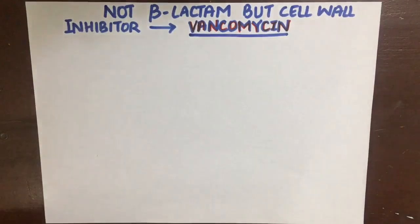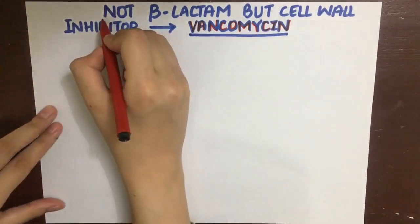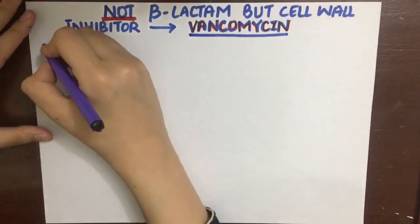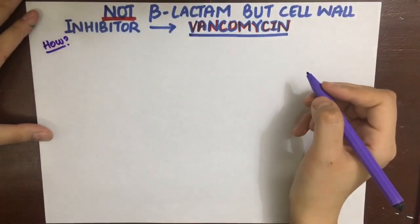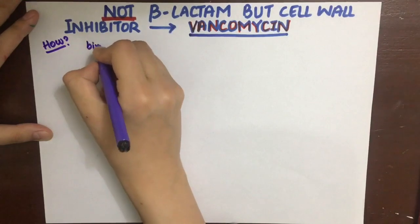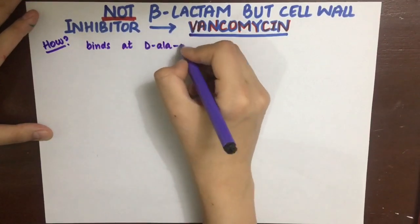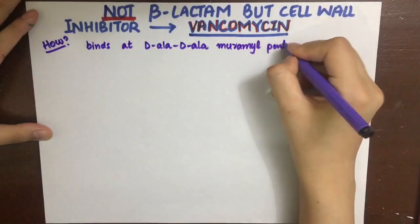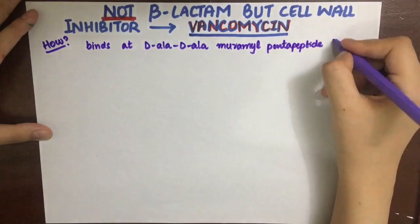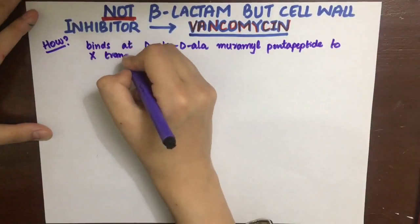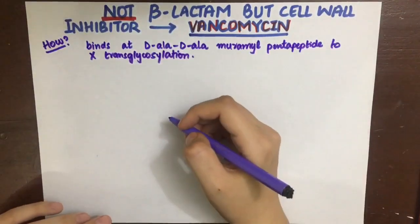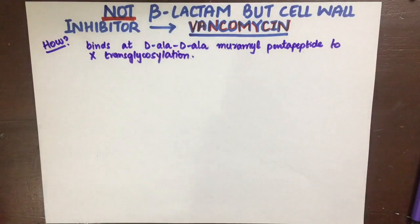Now we'll see an antibiotic that is not a beta-lactam but still its mechanism of action is the same — it is a cell wall synthesis inhibitor. That is vancomycin. Its mechanism of action is cell wall inhibition, but slightly different: as we studied for beta-lactam antibiotics, they worked by inhibiting transpeptidation, but vancomycin will inhibit transglycosylation.